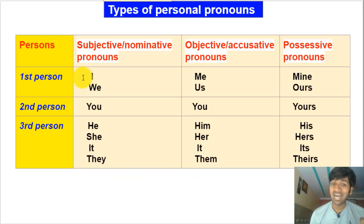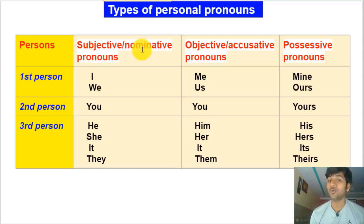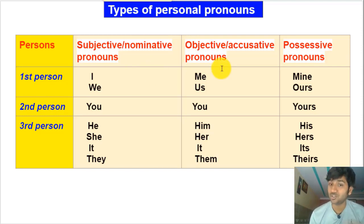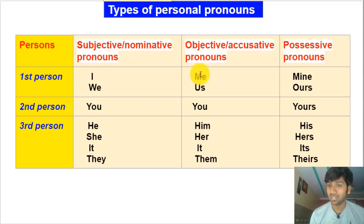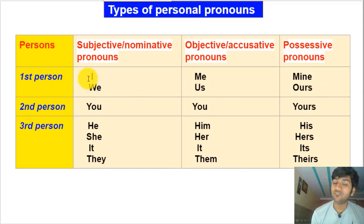In the first person we have two pronouns: I and we — these are subjective pronouns. Every personal pronoun can be used in three ways: as the subject of the sentence (subjective/nominative pronoun), as the object of a verb or preposition (objective/accusative pronoun), and as a possessive pronoun. So 'I' becomes 'me' in the objective case and 'mine' as possessive. For 'we' — where you are part of the group — it becomes 'us' (objective) and 'ours' (possessive).